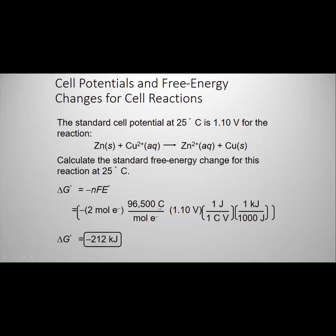F is Faraday constant, E° is 1.10 V. Dividing by 1000 to convert it to kilojoules, your outcome is going to be negative 212 kJ.